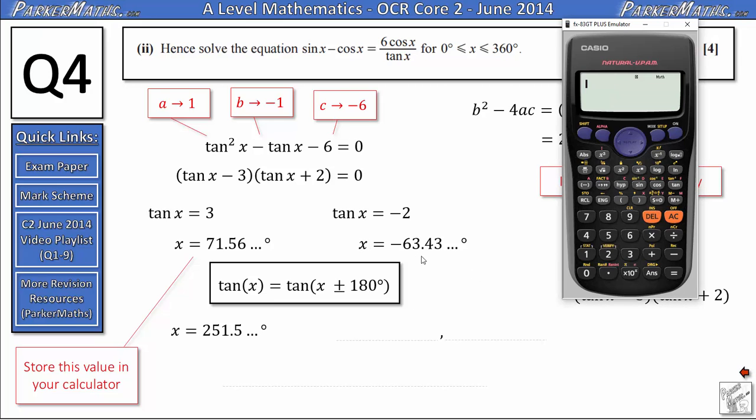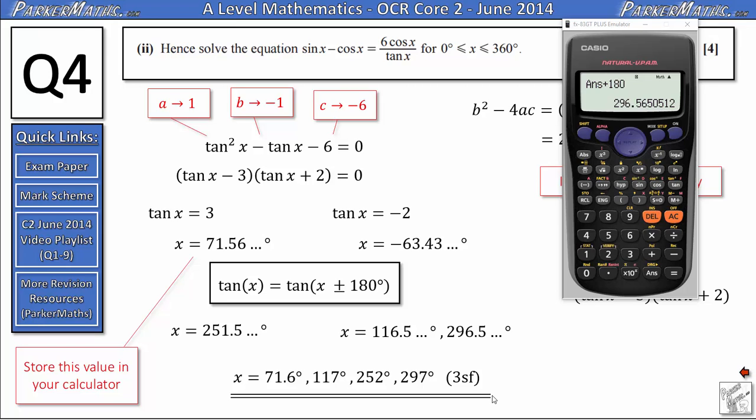Using the other solution with the -63.43 I stored that as B on my calculator. I can add 180 to that. That'll give me a solution that's 116.56 and so on. And I can add 180 to this again and still be within my region. And that gives me 296.56. If I added 180 to either of my solutions here I would be outside my region. So that is going to find me all my solutions. So I've got 71.6, 252, 117 and 297 when I round to three significant figures.